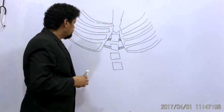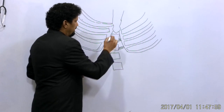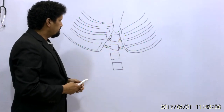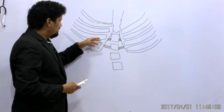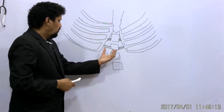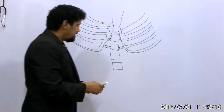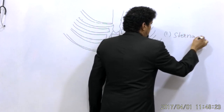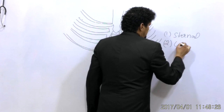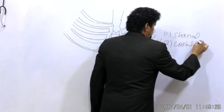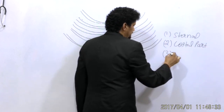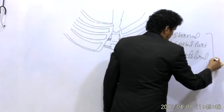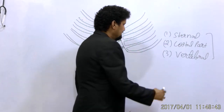The diaphragm takes its origin from three parts: first, the sternal part (xiphoid process); second, the costal part (from the costal cartilages and ribs); and third, the vertebral part. Each part contributes distinct fiber groups that converge toward the central tendon.